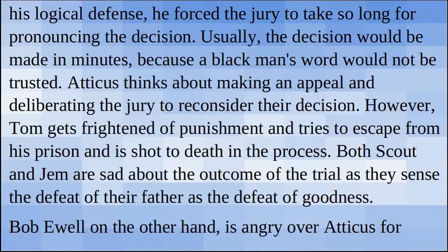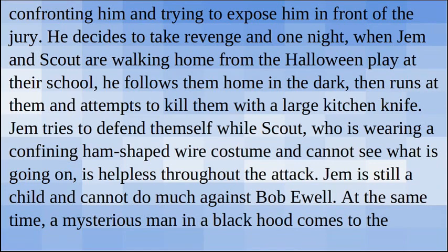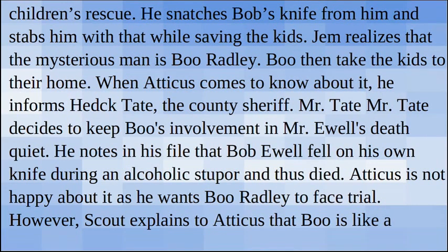Bob Ewell, on the other hand, is angry over Atticus for confronting him and trying to expose him in front of the jury. He decides to take revenge and one night, when Jem and Scout are walking home from the Halloween pageant play at their school, he follows them home in the dark, then runs at them and attempts to kill them with a large kitchen knife. Jem tries to defend themselves, while Scout, who is wearing a confining ham-shaped wire costume and cannot see what is going on, is helpless throughout the attack. Jem is still a child and cannot do much against Bob Ewell. At the same time, a mysterious man in a black hood comes to the children's rescue. He snatches Bob's knife from him and stabs him with it while saving the kids.